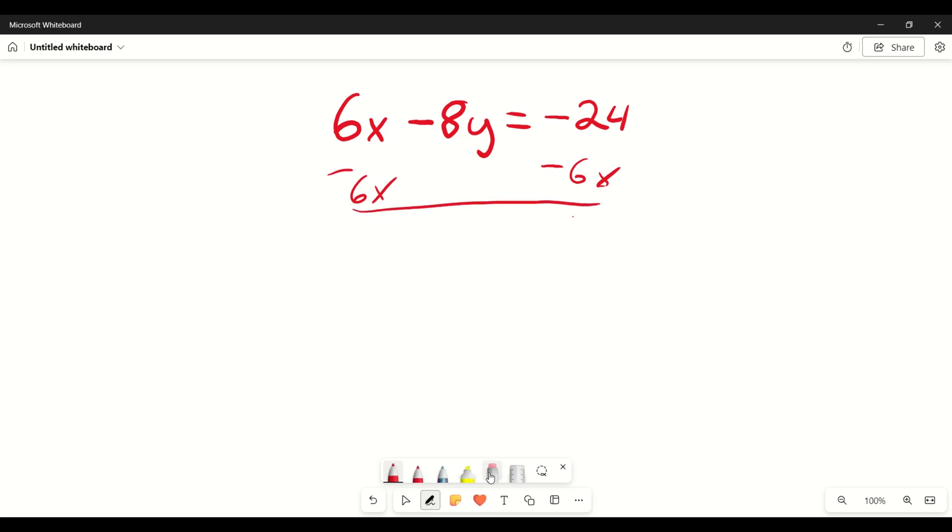Let me just delete this and then write it out. Negative 8y equals, I'm going to put it like this, negative 6x, negative 24.